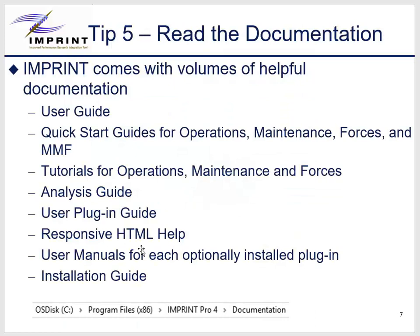The fifth tip is to utilize the user documentation. There are several documents that have been created to help Imprint users. There is a user guide that is over 1,000 pages, quick start guides, tutorials, an analysis guide, user plugin guide, responsive HTML help, manuals for each plugin, and an installation guide. All of these are installed with Imprint and can be accessed from the installation directory in a documentation subfolder. By default, this location is: Program Files (x86) / Imprint Pro 4 / documentation.